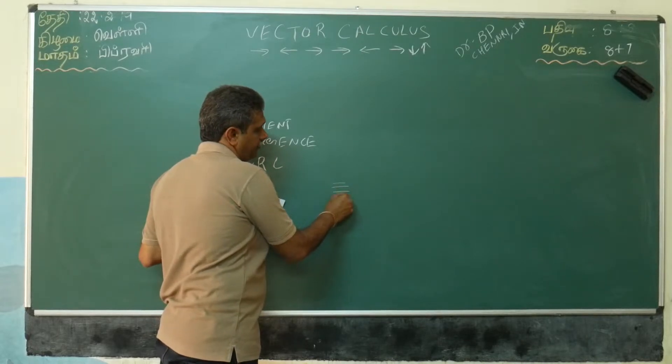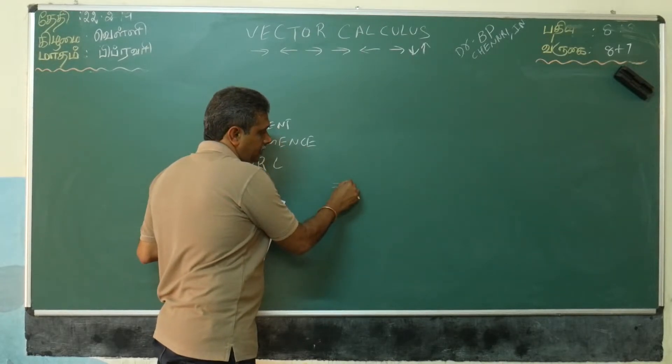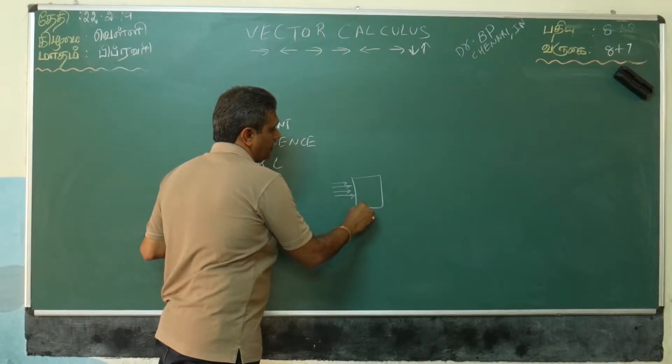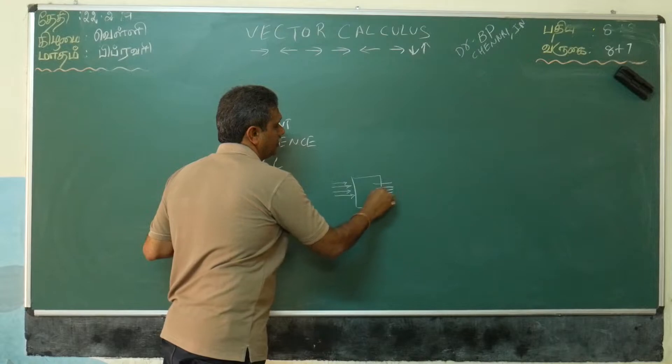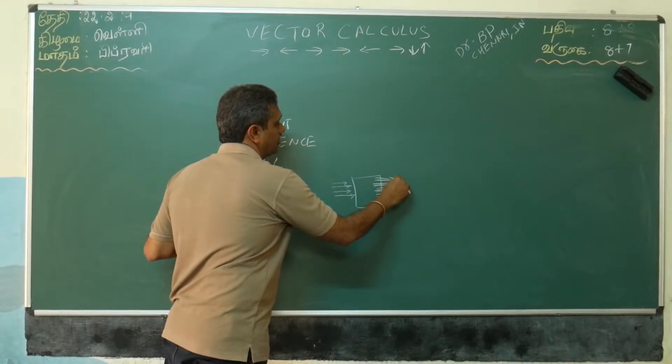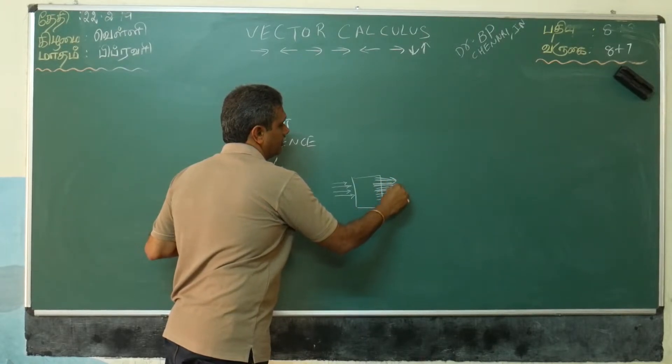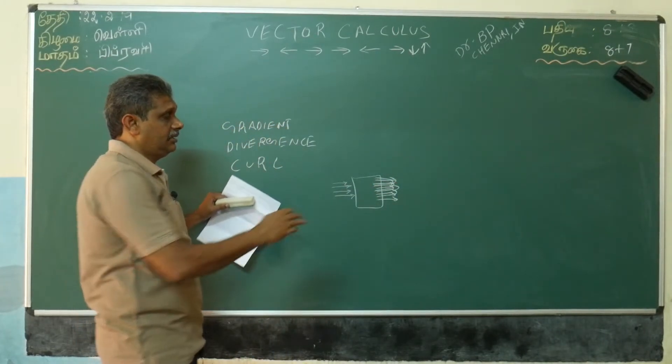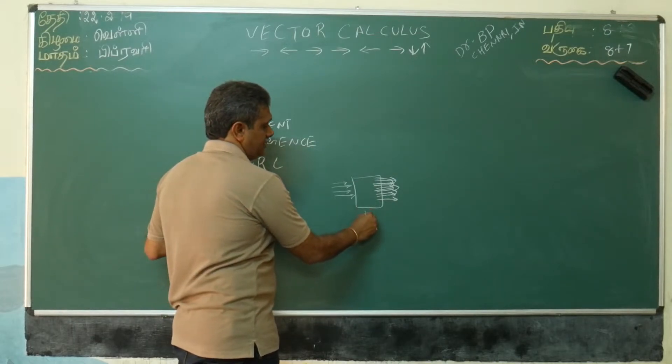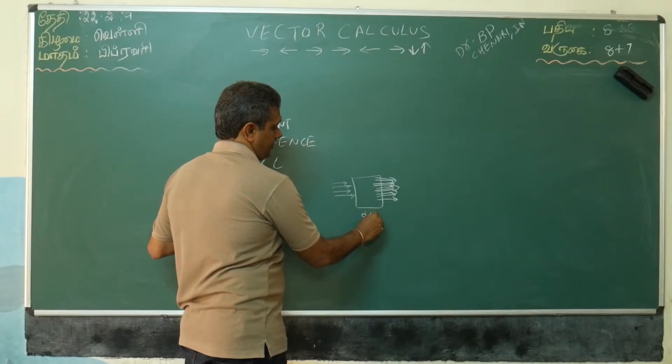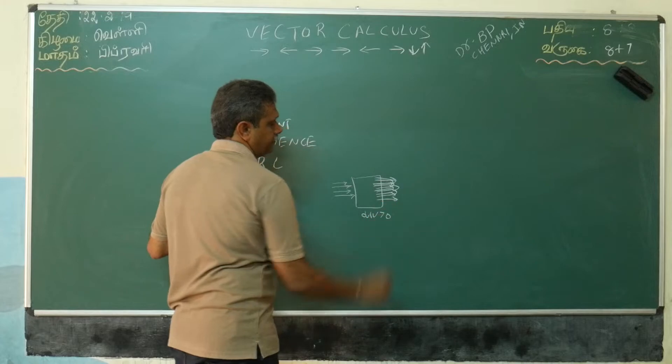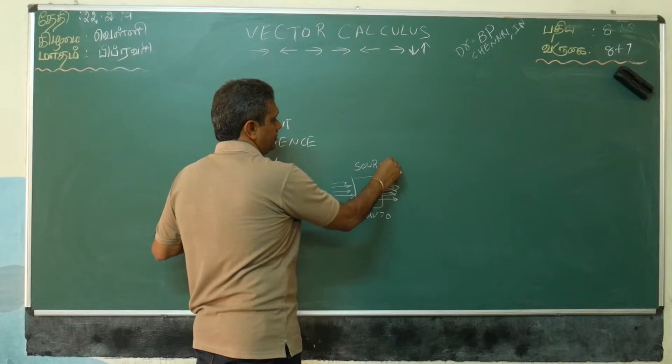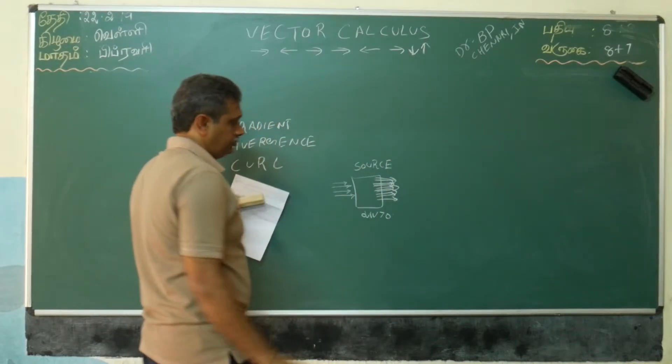When divergence is greater than zero means more force. Inflow rate is less than external flow rate means divergence is greater than zero. That is called source. The point is called source.